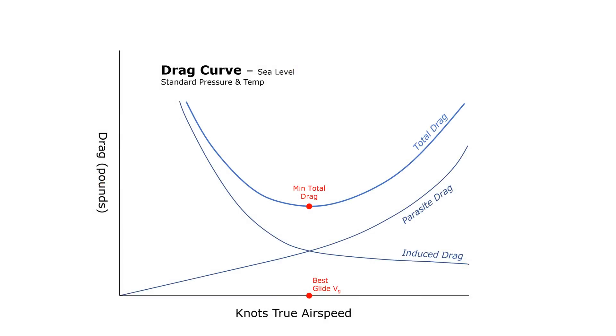What this means is that we can think of our total drag curve as also representing our thrust-required curve. In order to maintain any airspeed on this chart, we'll need at least as much thrust as the total drag listed on that blue U-shaped curve.